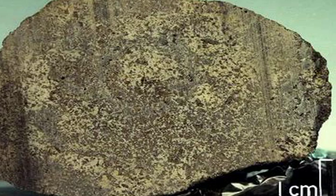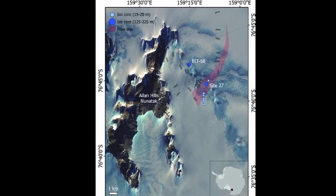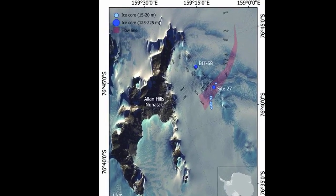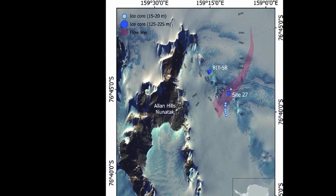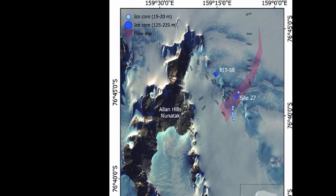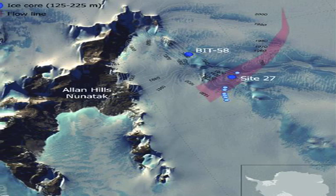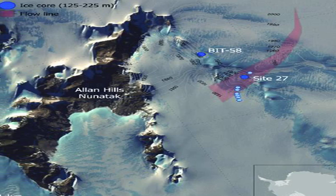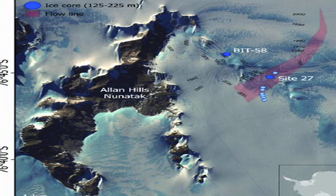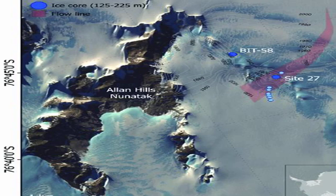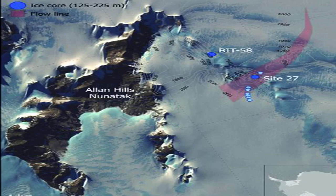Olivine occurs as somewhat rounded anhedral to subhedral grains up to 2 millimetres long and has an unusual pale brown colour; microprobe analyses show a mean composition of Fa28. Pyroxene occurs as colourless prismatic crystals up to 6 millimetres long, often poikilitically enclosing olivine. Some crystals show coarse polysynthetic twinning. The composition is somewhat variable, averaging Wo5 Fs23 En72. Maskelynite is present as laths interstitial to olivine and pyroxene, with labradorite composition AN53, and contains 0.20–0.3% K2O.